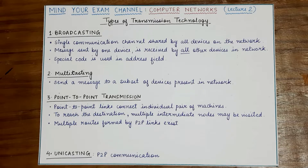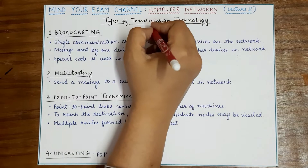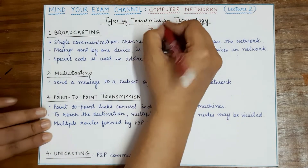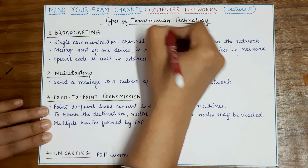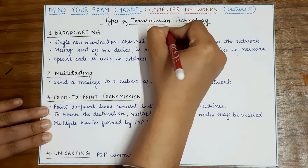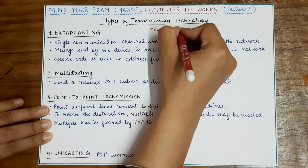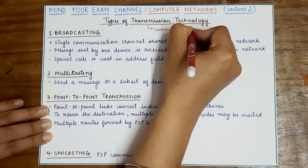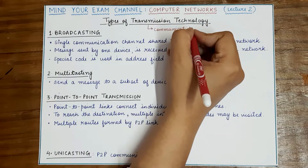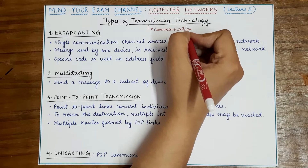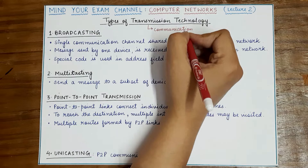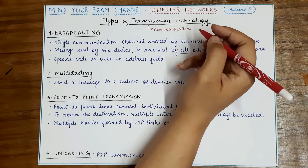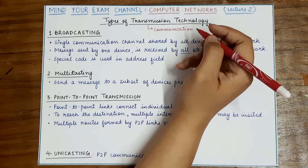When I say transmission, transmission basically refers to what kind of communication is happening. In the previous video, we understood that a network is a collection of communicating or digital devices that are interconnected so that they can exchange information via some form of transmission media. That transmission can either be wired or wireless.